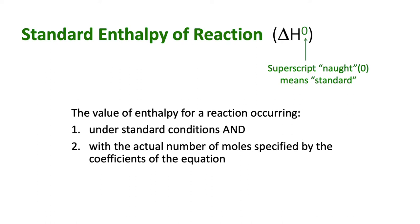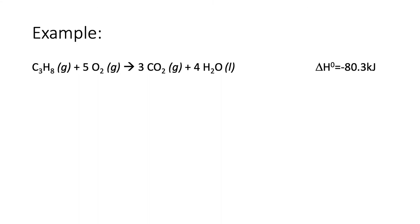This is the value of enthalpy for a reaction that occurs under standard conditions and with the actual number of moles specified by the coefficients of the equation. For example, if you react one mole of propane, C3H8, with five moles of oxygen, that gives you three moles of carbon dioxide gas plus four moles of water. If this happens at one bar and 25 Celsius, that gives you a standard enthalpy of negative 80.3 kilojoules.